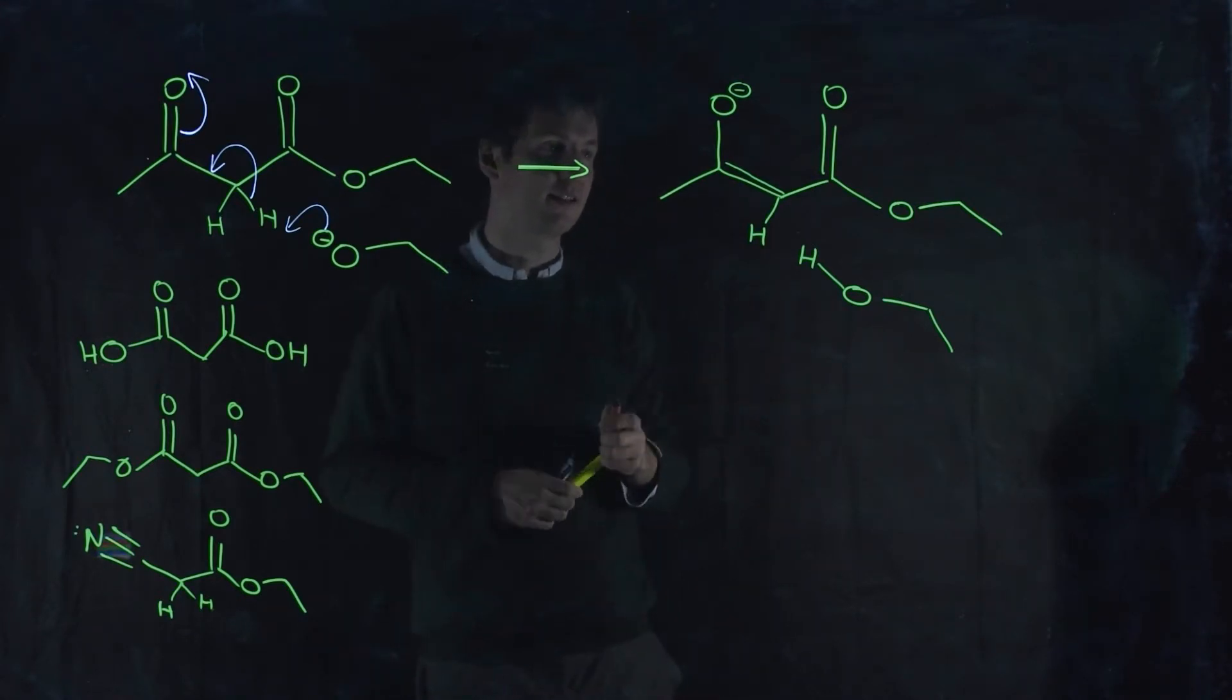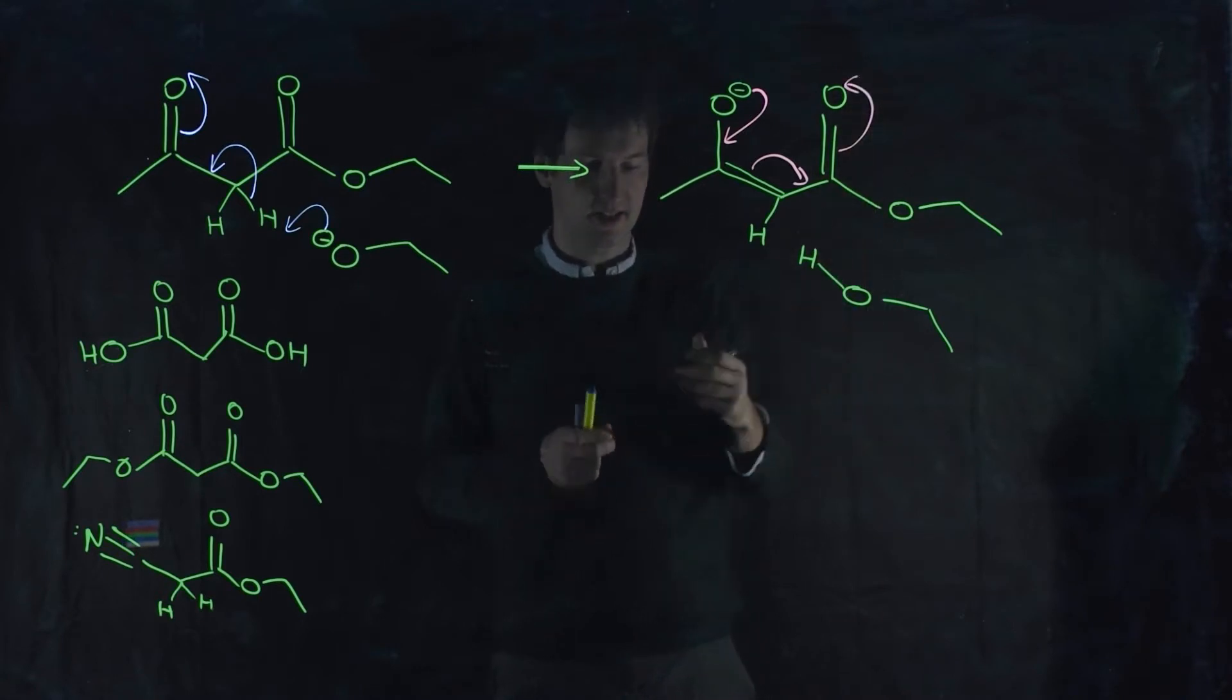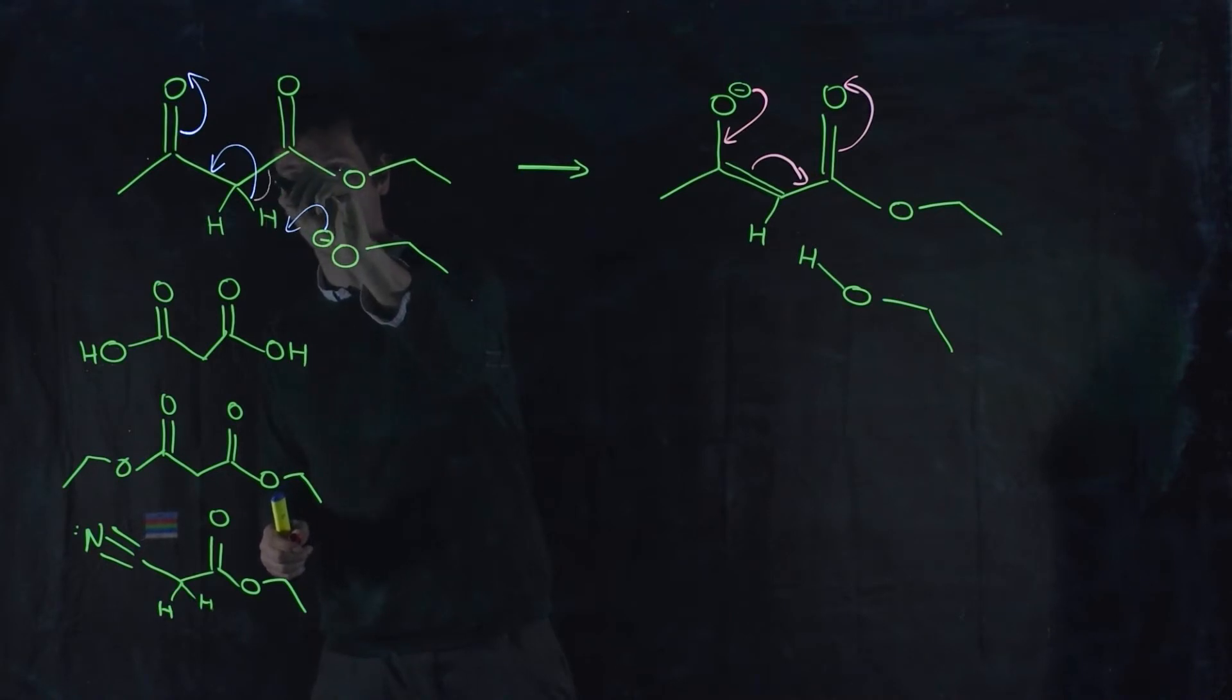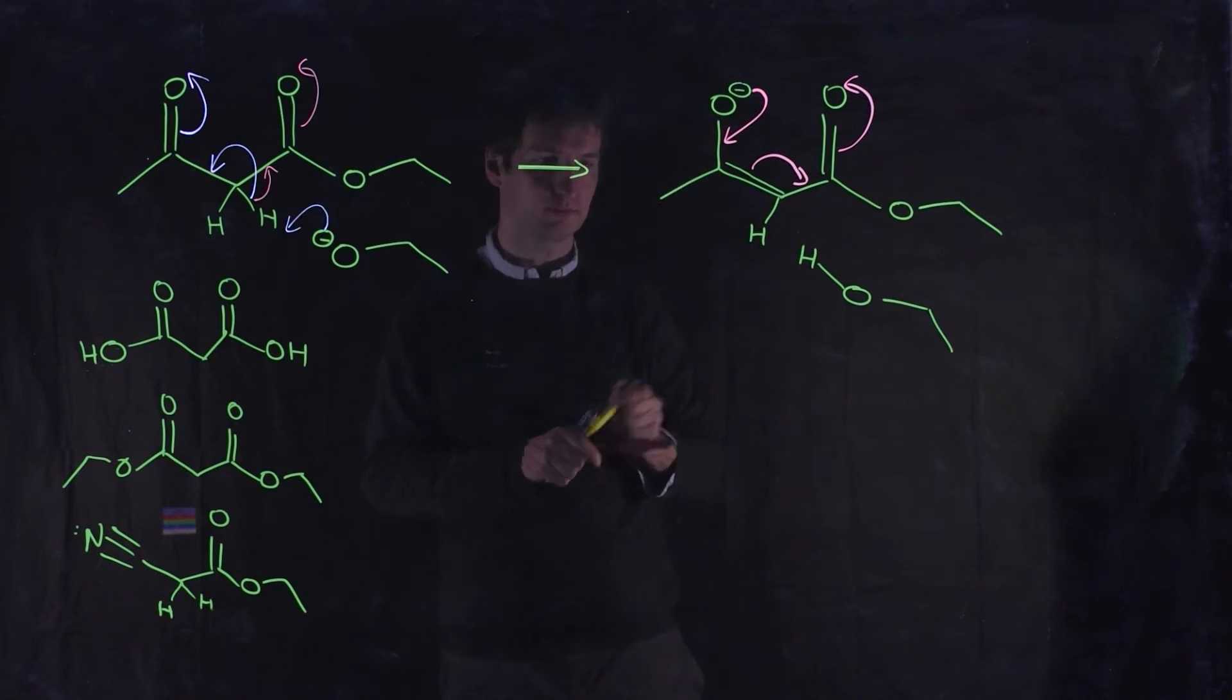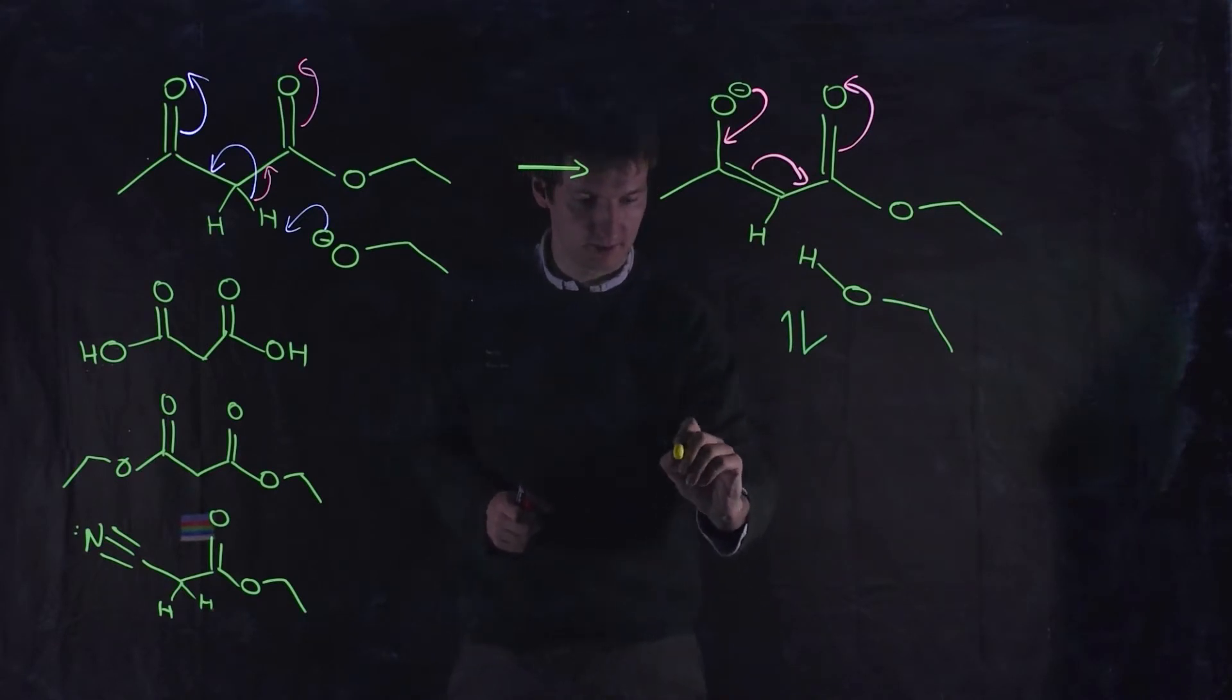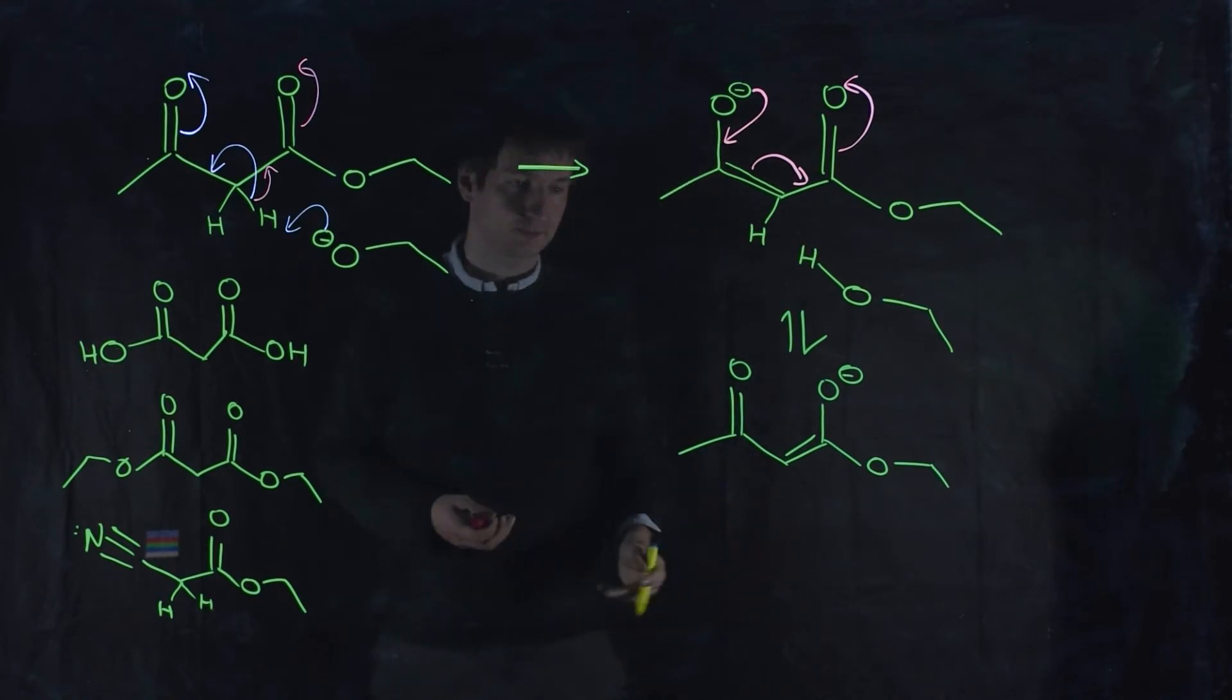But if we look at this enolate, this enolate can resonate. So, you can move that pair of electrons there, that pair of electrons there, and that pair of electrons there, and form the other enolate resonance structure that I could equally well have drawn. So, I could have made that form. And in that case, what I would have got was this molecule here.